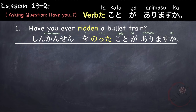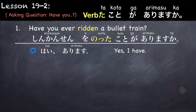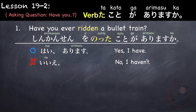If your answer is yes, I have, you can say: hai, arimasu. Or the long version: hai, shinkansen o notta koto ga arimasu. But you can just answer hai, arimasu in short. If you say no, I haven't, you can say: iie, arimasen. Or the long version: iie, shinkansen o notta koto ga arimasen.